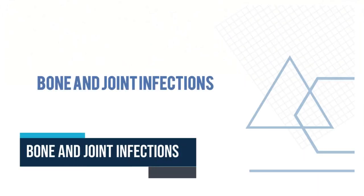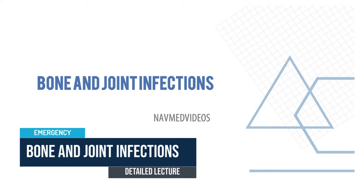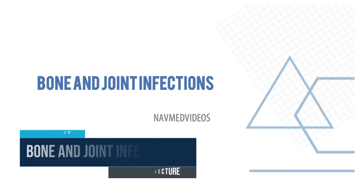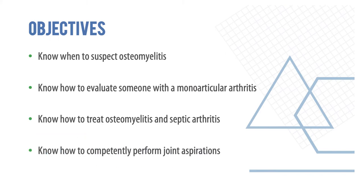Talking about bone and joint infections today — welcome to another lecture. The idea here is to know, when you're in the emergency department and someone presents with an infection, when to suspect osteomyelitis, which is an infection of the bone; how to evaluate someone with a single joint infection or monoarticular arthritis; and how to treat osteomyelitis or septic arthritis and perform joint aspirations.